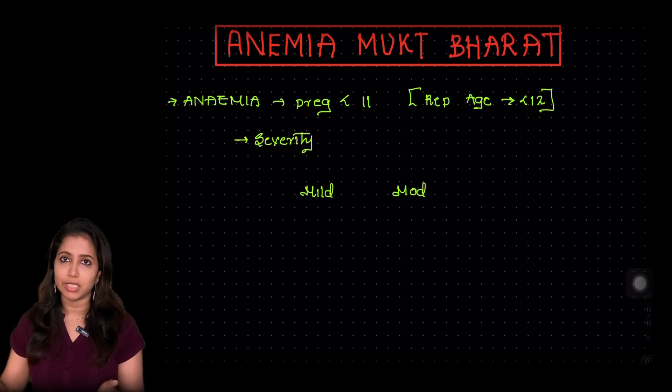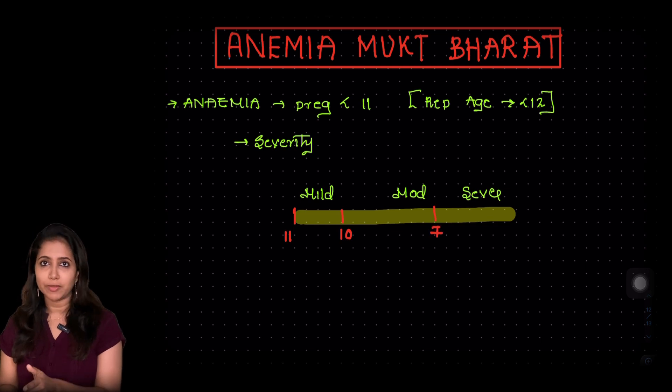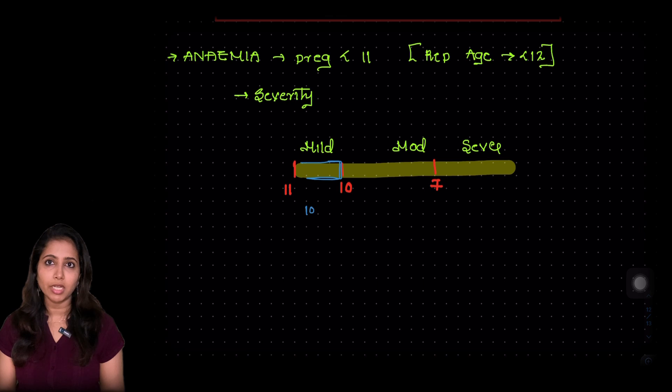I want you to draw this line along with me and mark 11, 10, 7. So when the hemoglobin is more than 11, there is no anemia. When there is 10 to 10.9, it is mild anemia. 7 to 9.9 is moderate anemia and less than 7 is severe anemia.